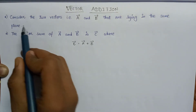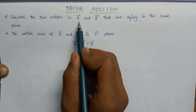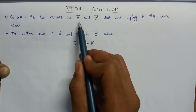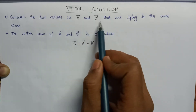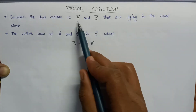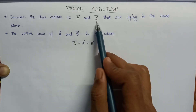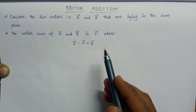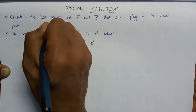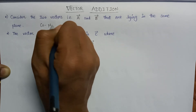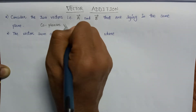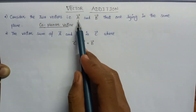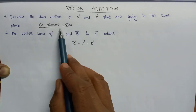Now let us have a look at the two vectors, A vector and B vector. These two are vector quantities because there is an arrow over them. A vector and B vector are lying in the same plane. The vectors that are lying in the same plane are known as coplanar vectors. So this A vector and B vector are nothing but coplanar vectors.